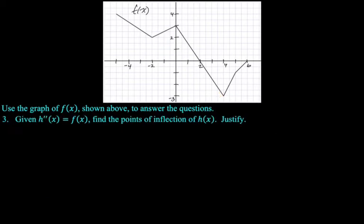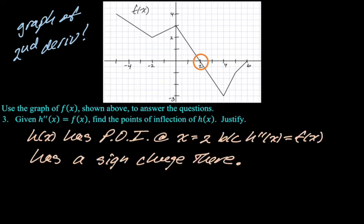Next problem. H double prime is f of x. Okay, so h double prime is f of x, which means f of x is the second derivative this time. So we're looking at the graph of the second derivative. We're looking for points of inflection. So this we would want where there's a sign change, right, where the graph of f goes from positive to negative, or negative to positive. So there's really only one of those in this case, which is nice. So that'll be our point of inflection. And we'll just write up our solution. H of x has points of inflection, or point of inflection rather, at x equals two because h double prime, which equals f of x, has a sign change there. I think that's all you need.